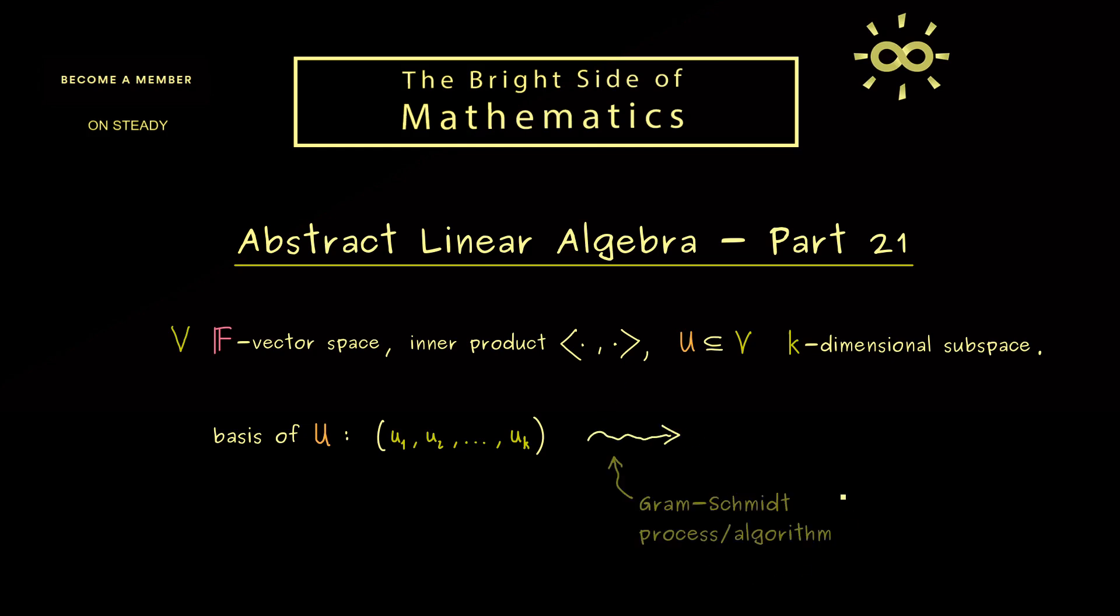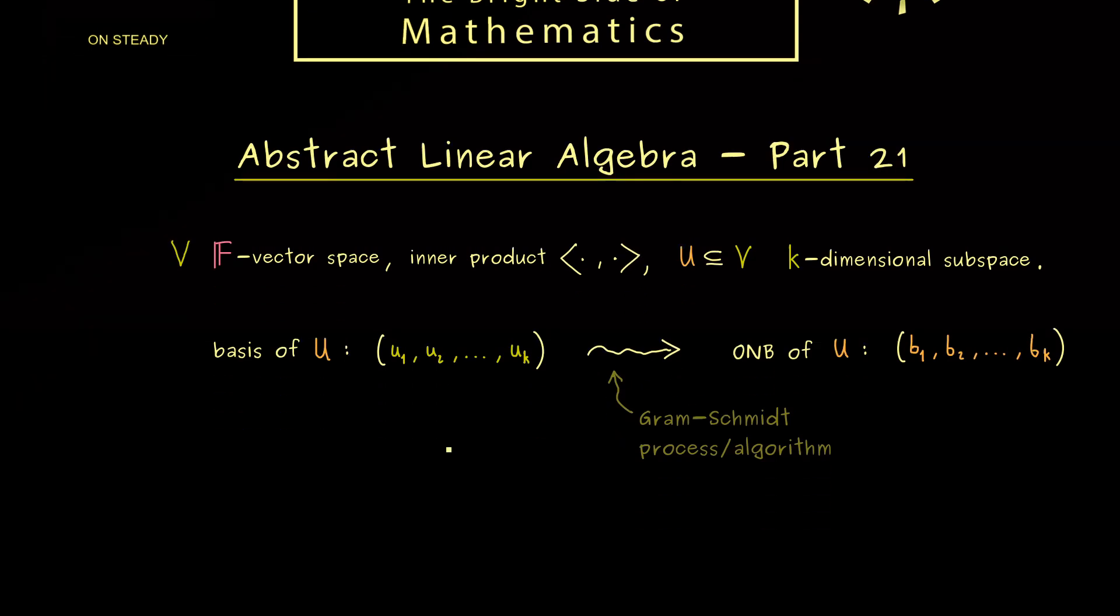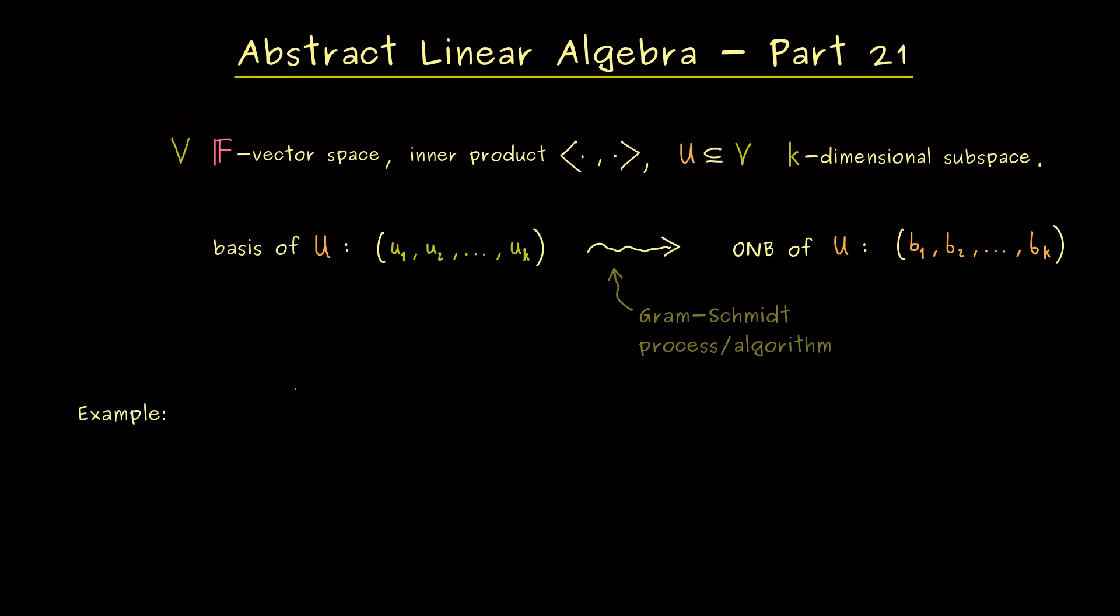That's where the Gram-Schmidt process or algorithm comes in, simply because it's able to transform the original basis into a new one which is an ONB. As we discussed in the last video, we can split the algorithm up into k steps and then it's finished. It's definitely something you can implement as a computer program, but here I want to show you a pen and paper calculation.